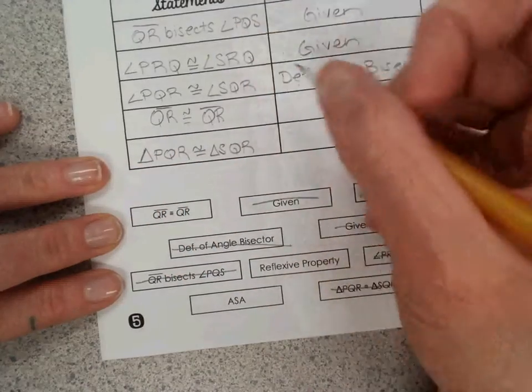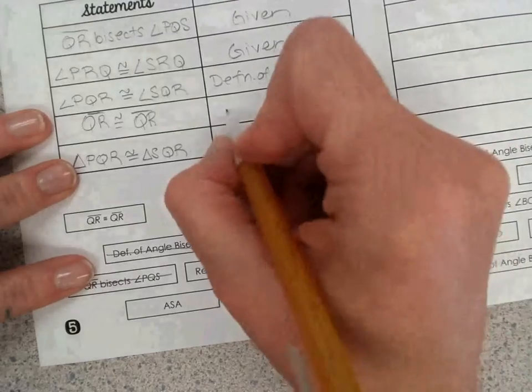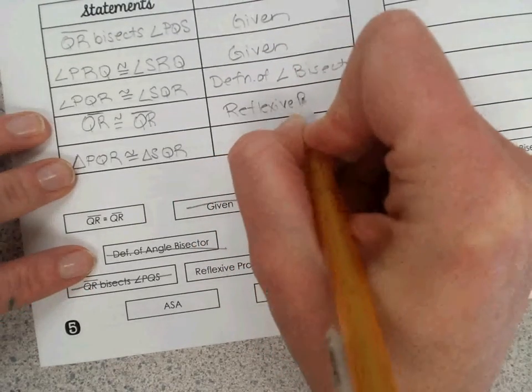Again, we marked that in the beginning. Remember that? We marked it with a zigzag. And whenever we make a statement like that, it's always called the reflexive property.